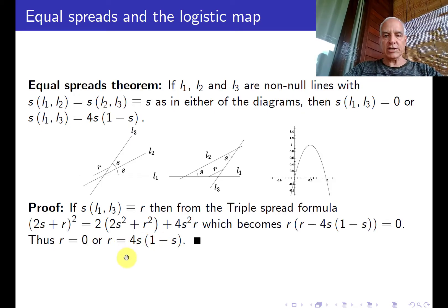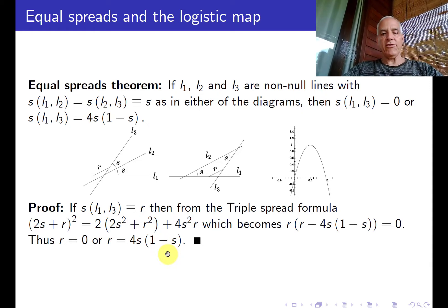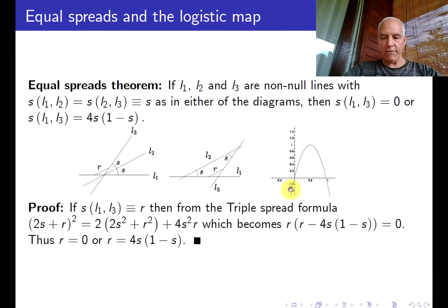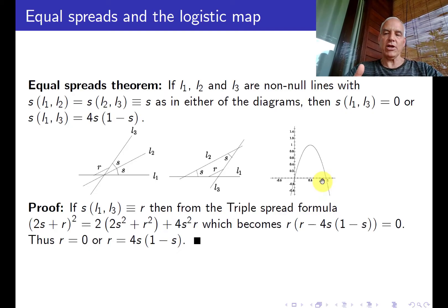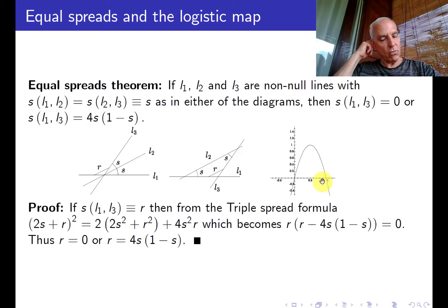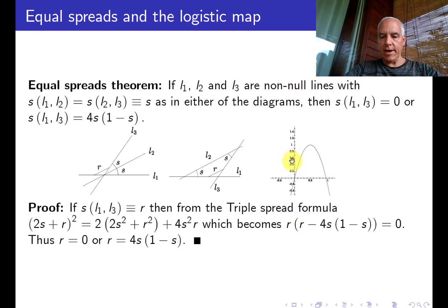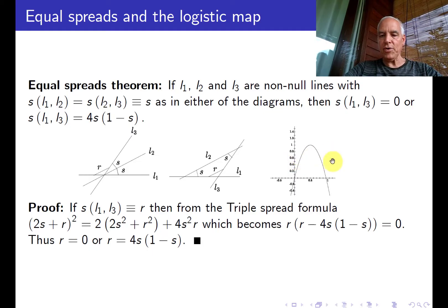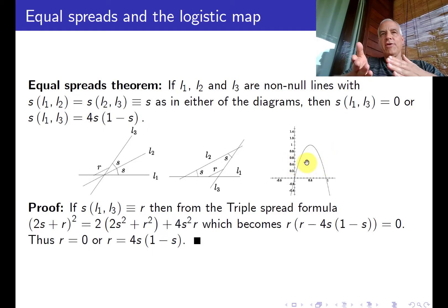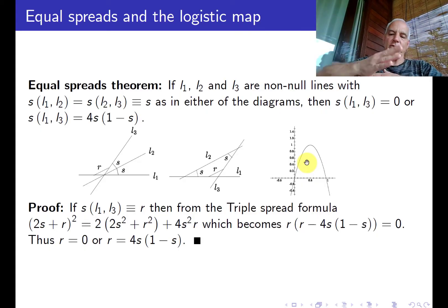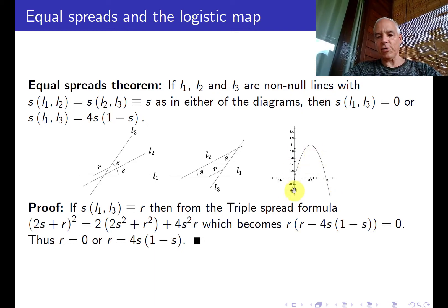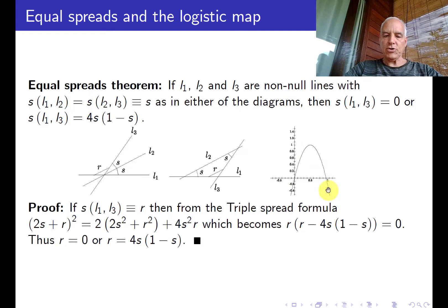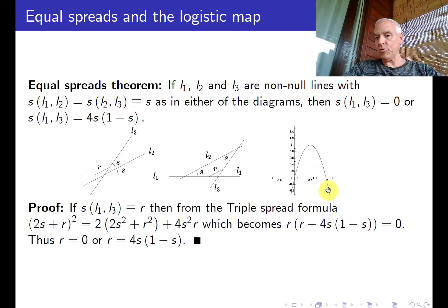Now this particular function is called the logistic map and it plays an important role in chaos theory. Here's the graph of it. It's an inverted parabola. From 0 to 1 it goes from 0 to 1, so you can regard this as a map from the interval [0,1] to itself. But it's not a 1-to-1 map. It folds the interval over onto itself in a 2-to-1 fashion. This is actually the second spread polynomial.